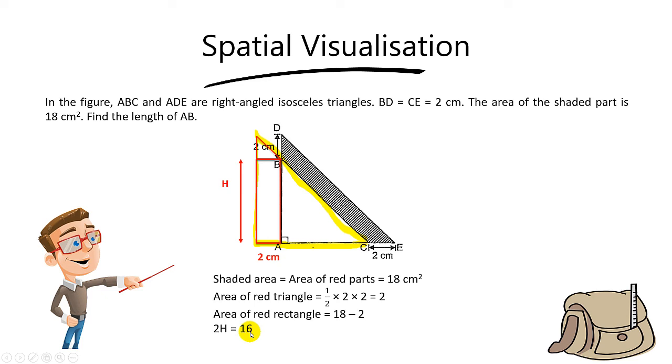We know the area of the rectangle is 2 times H, where H is the length of AB. Therefore, to find the length of H, simply take 16 divided by 2, and the answer is 8cm. This will be the length of AB.